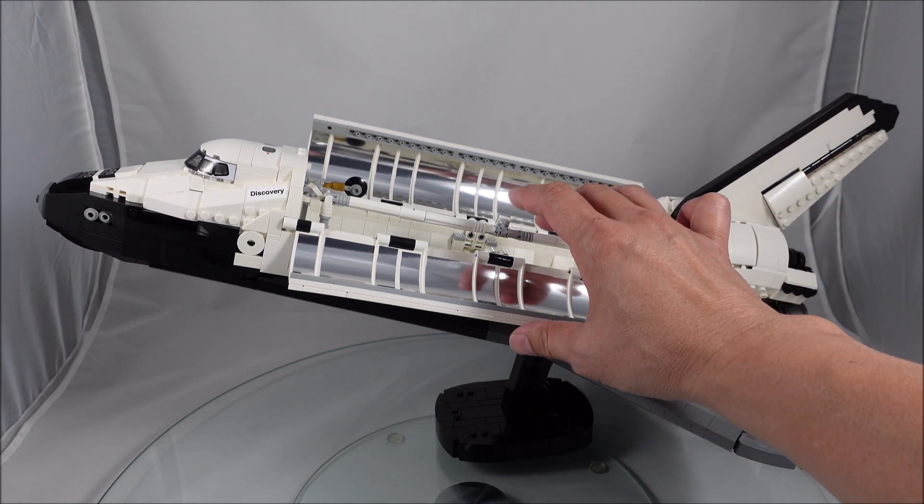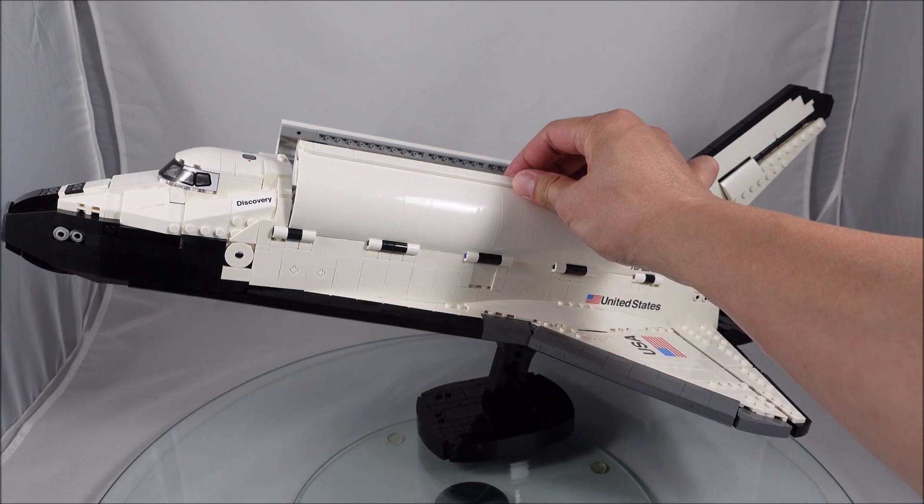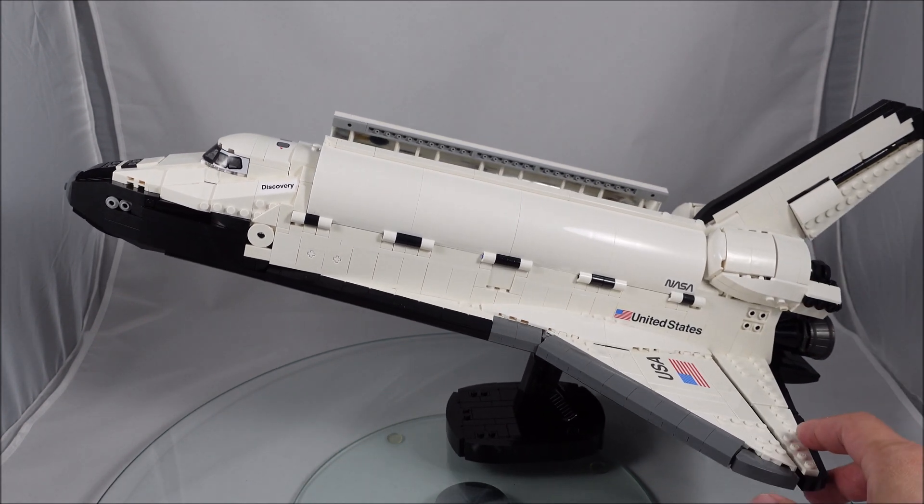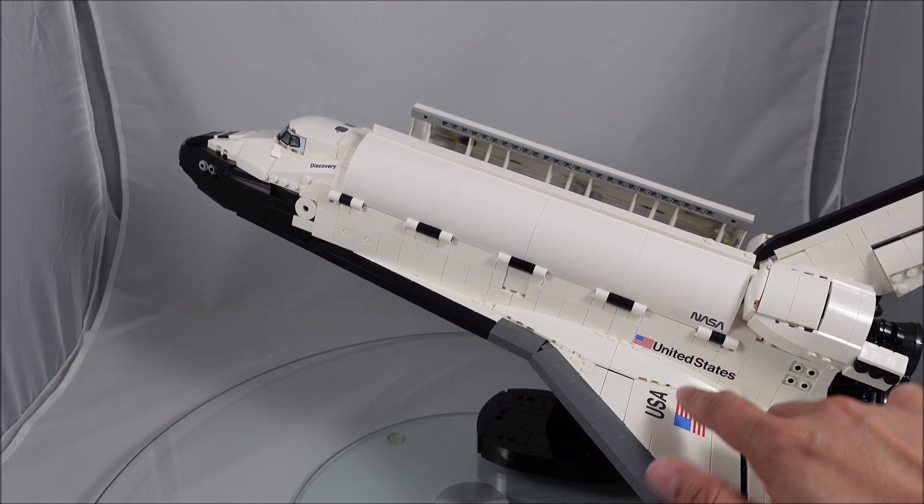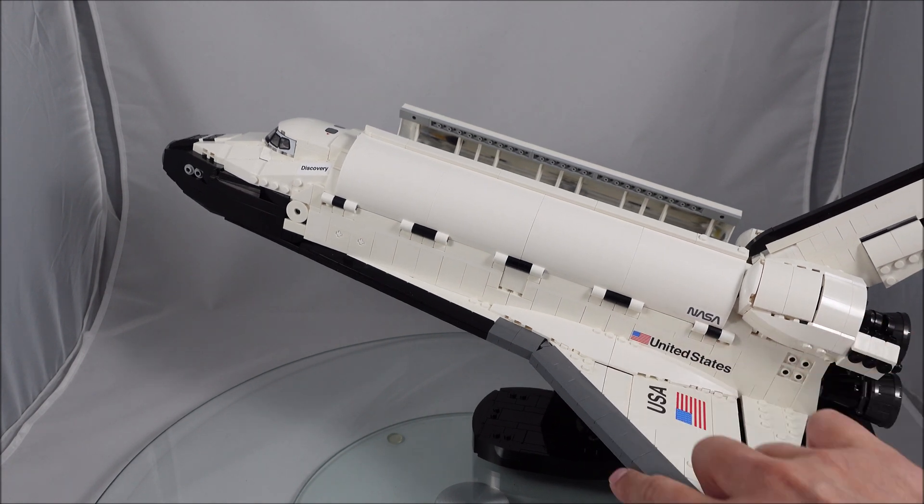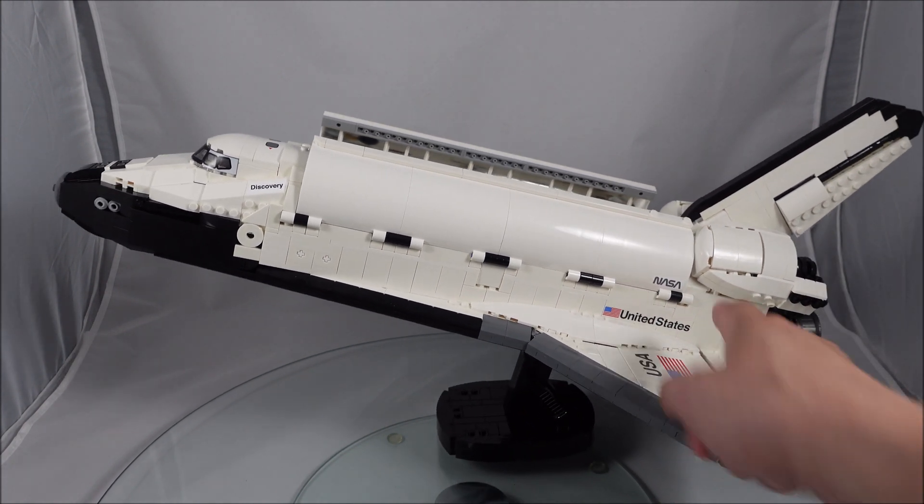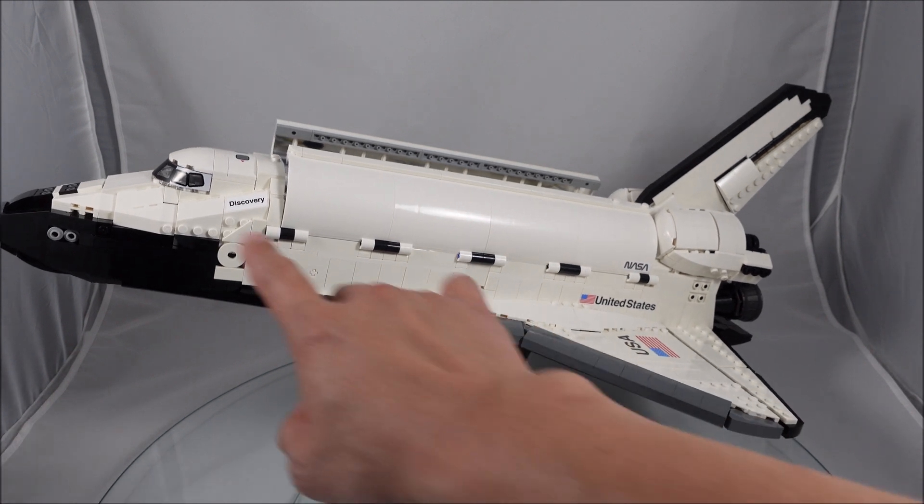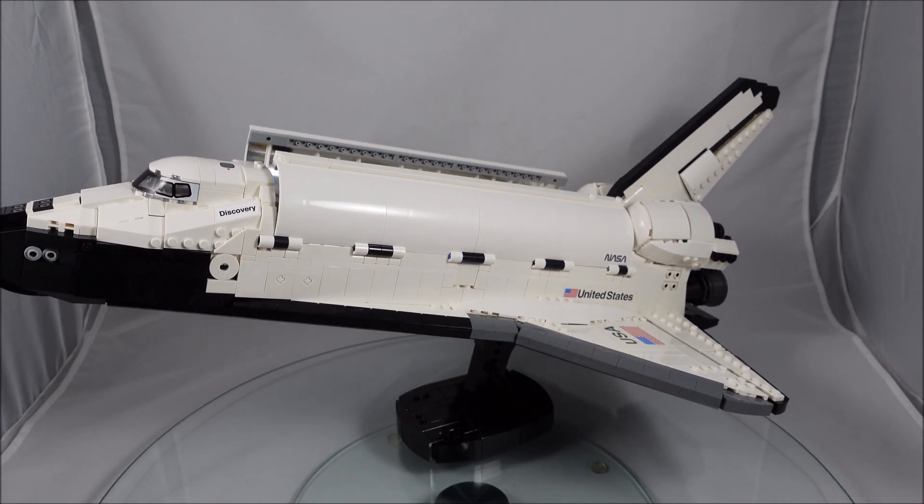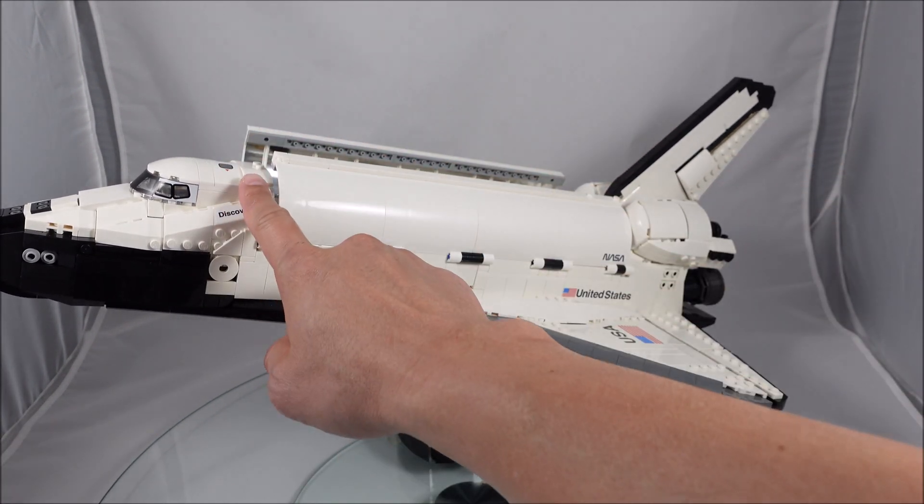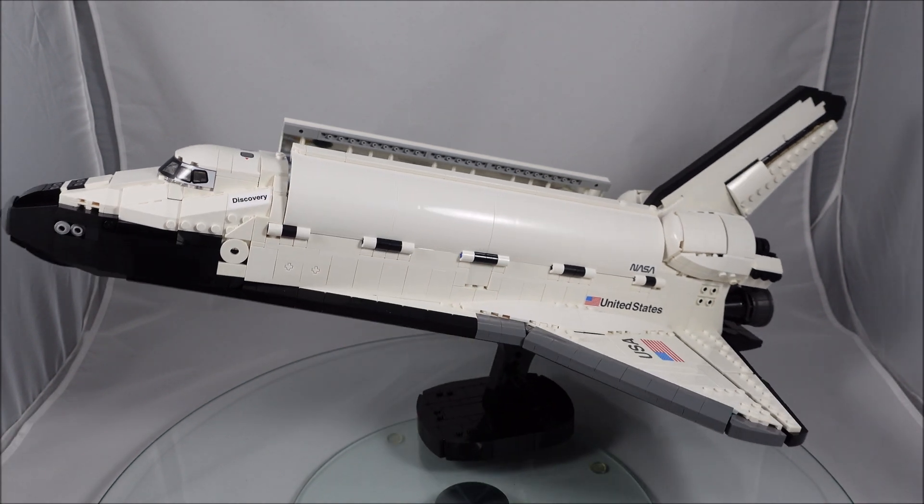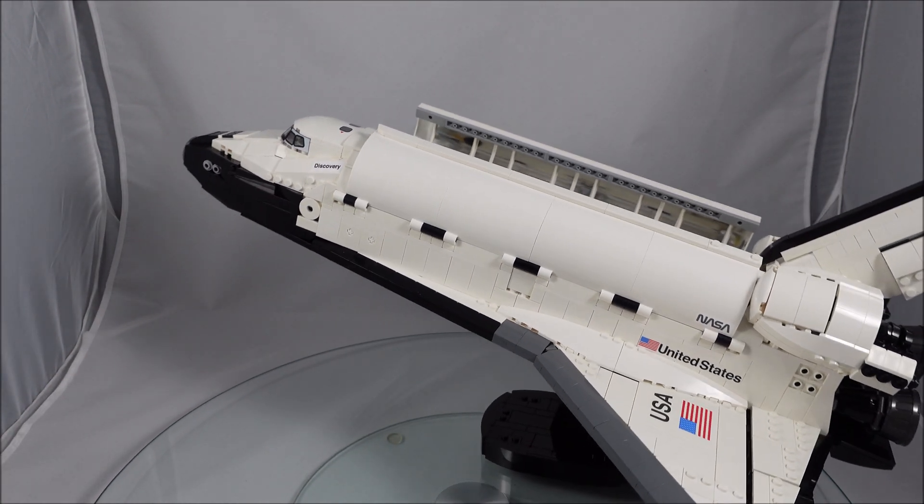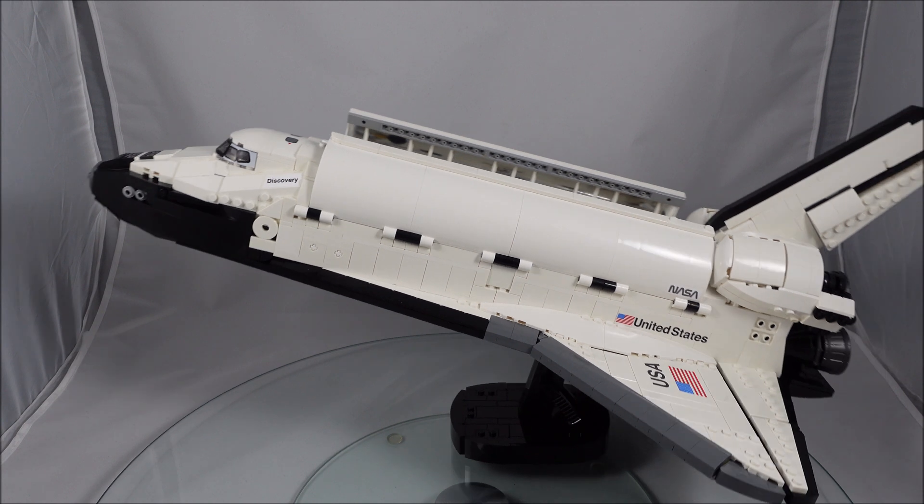I don't know why they can't just print them. There are quite a few other printed pieces like the US logo here. But there are a few other stickers as well, like the NASA logo at the back there, Discovery at the front. They are all stickers. But the panels up the top here, they are prints. So it can be done.